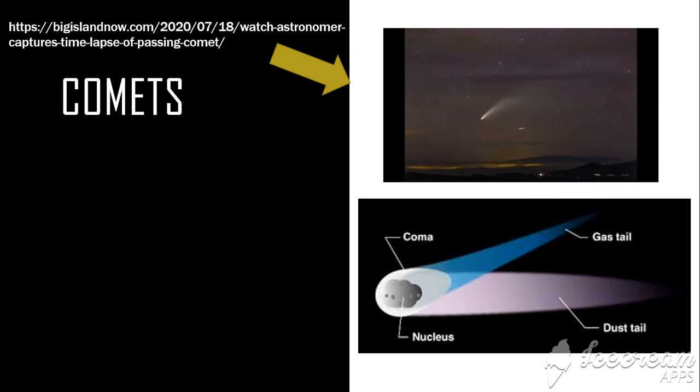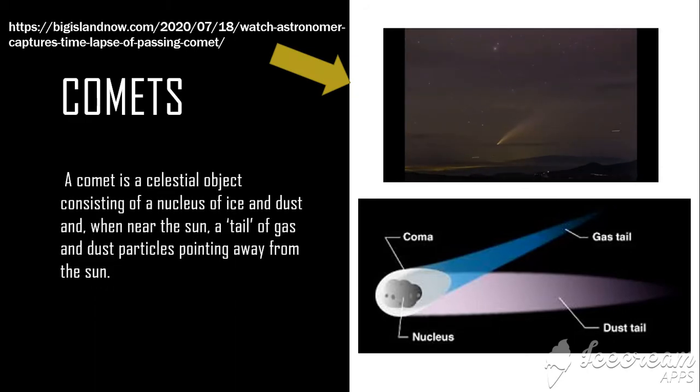In every 30 years you see a comet. What is a comet? A comet is a celestial body made up of ice. And as it goes closer to the sun, the ice melts and forms a tail. This is the coma, nucleus, gas tail, and the dust tail.